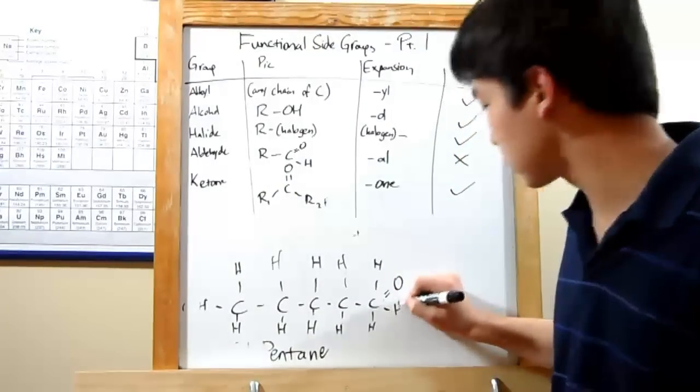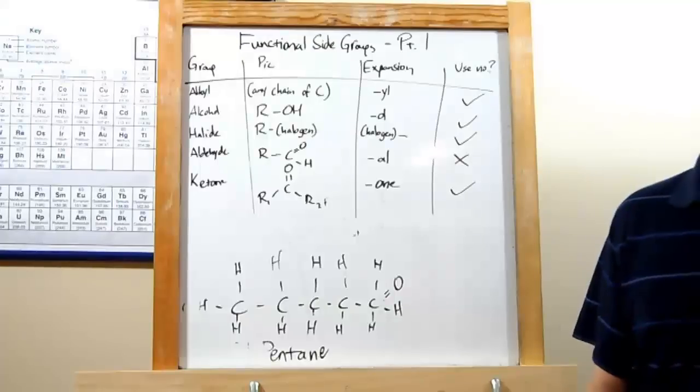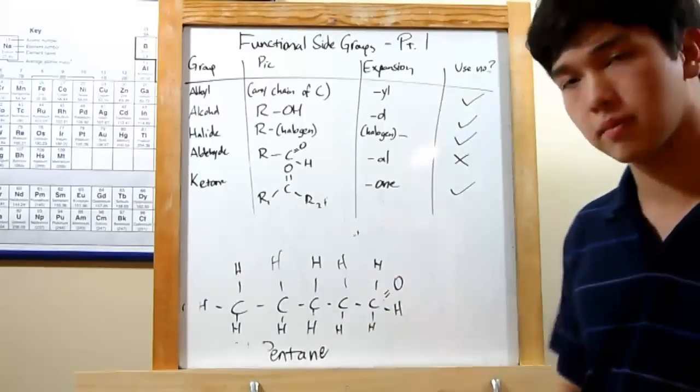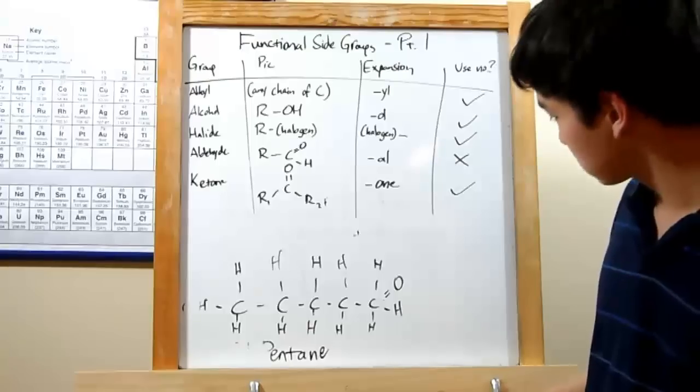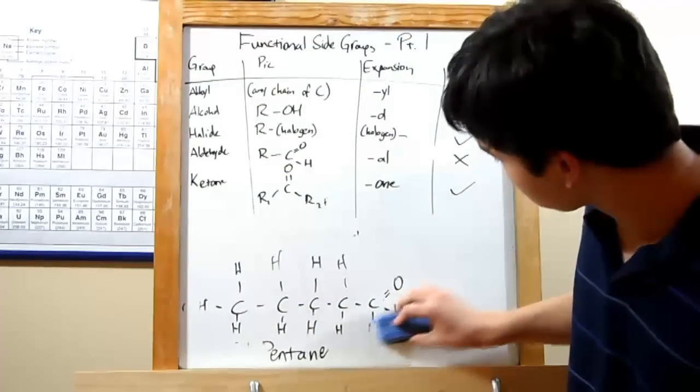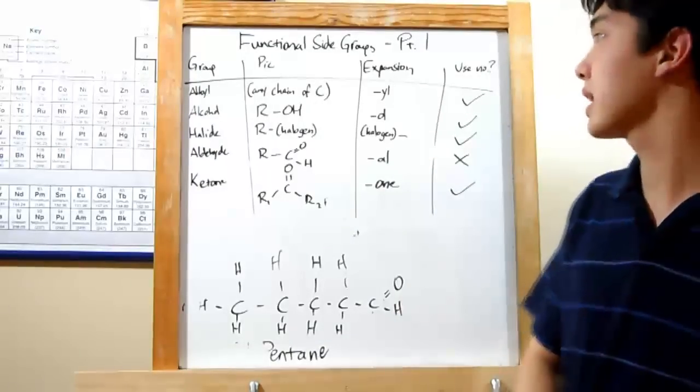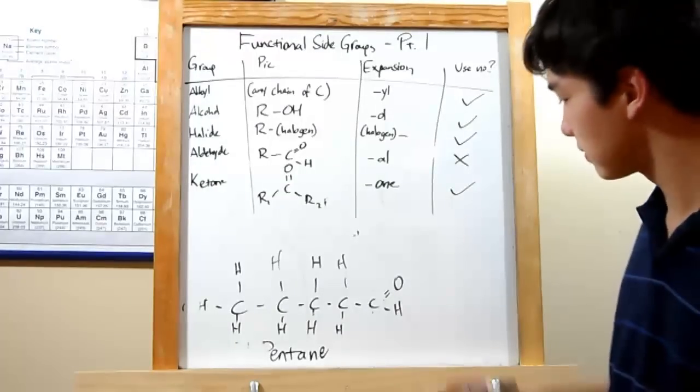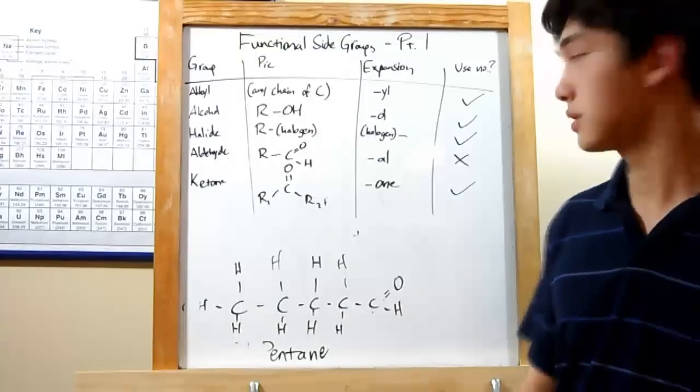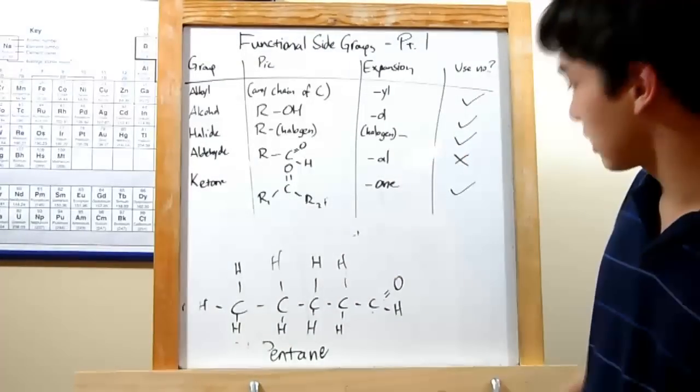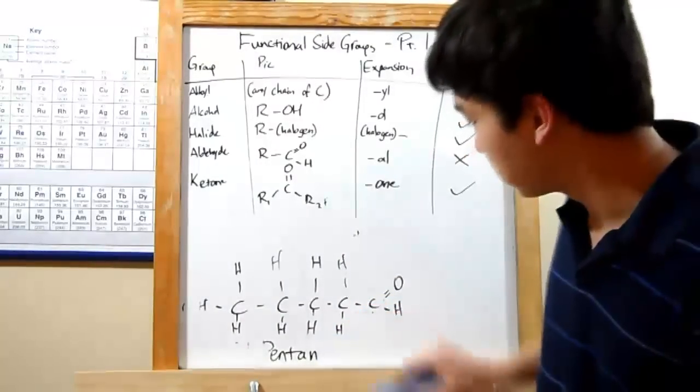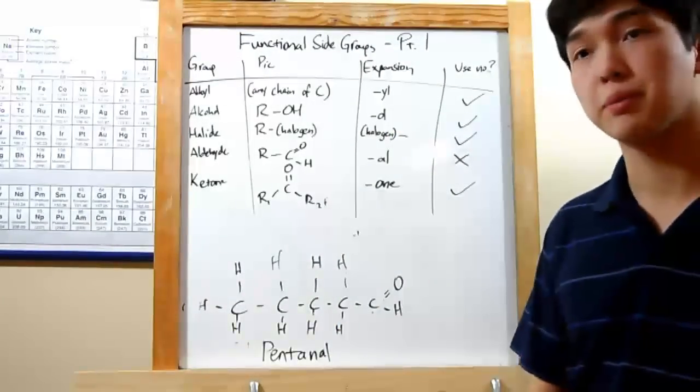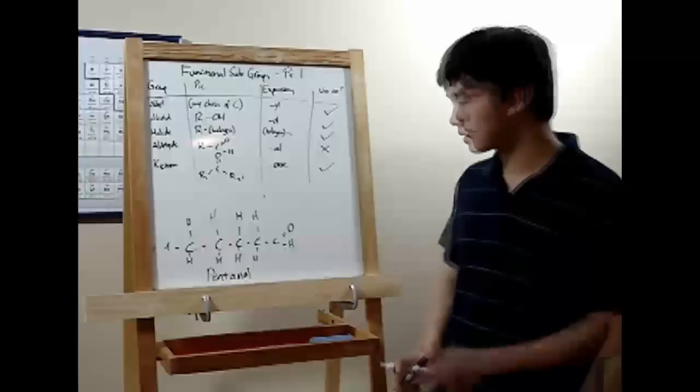When adding on functional side groups, you need to make sure that the total number of bonds any carbon has is four. Here we have one, two, three, four, five, six. That's too many. So we're going to get rid of two hydrogens. When getting rid of hydrogens, make sure that they're not coming out of your functional side group. Otherwise, it's not going to be the functional side group anymore. So now we have one, two, three, four bonds. Everything's good. Now we just need to change the ending. So instead of pentane, we're going to call that pentanal. You do not need to use a number to indicate where it is because it will always be on the end.